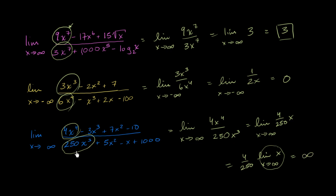An obvious way of seeing that from the get-go is to realize the numerator has a 4th degree term while the highest degree term in the denominator is only 3rd degree. So the numerator grows far faster than the denominator, and you approach infinity. Conversely, if the denominator is going far faster than the numerator, like the previous case, you approach 0.